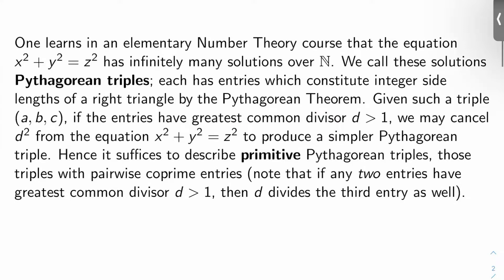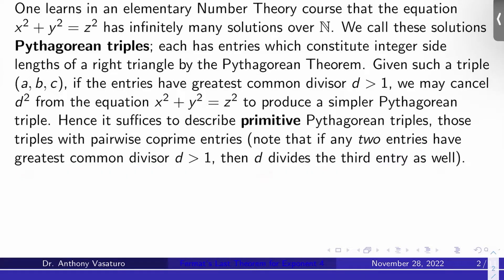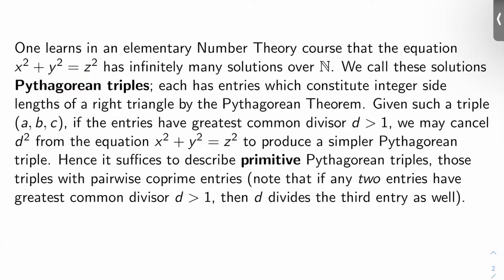If I give you such a triple ABC, and the entries have greatest common divisor d that's bigger than one, we can cancel a d squared from both sides of the equation to produce a simpler Pythagorean triple. So to describe all Pythagorean triples, I only have to describe the primitive Pythagorean triples, which are those triples that have pairwise co-prime entries. This is allowed because if any two entries have greatest common divisor d bigger than one, then d automatically divides the third entry as well because of the Pythagorean equation.